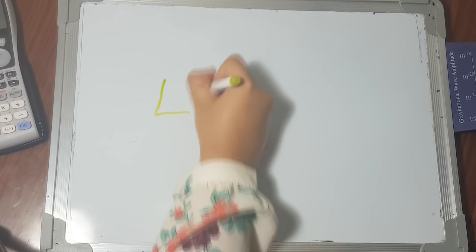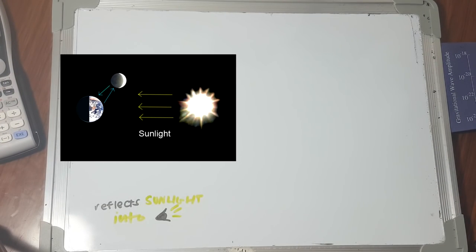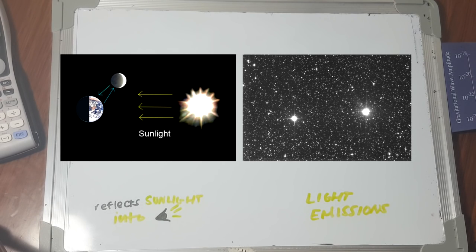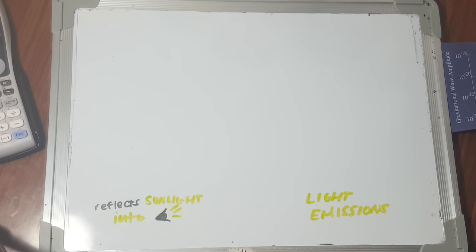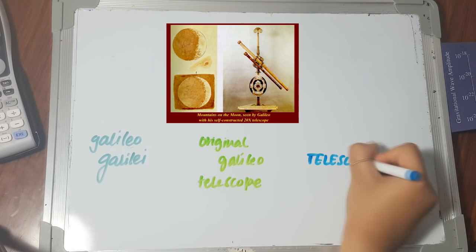Most of our knowledge about the universe comes from light. We can see the moon because it reflects sunlight into our eyes. We can see the stars twinkle because of light emissions. Galileo Galilei pioneered the use of the telescope to enhance these observations using visible light.